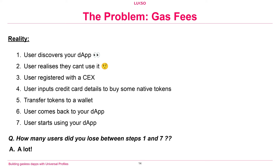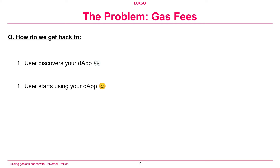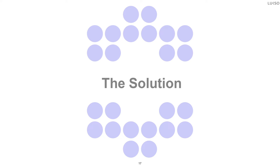The reality is users see your dApp, realize they can't use it, and have to go away — to a centralized exchange, do KYC, put in credit card details, send tokens to a wallet — then come back. How many users did you lose between steps one and seven? A lot. We're inherently limiting ourselves to users who've already gone through those seven steps. We want to get back to: users discover your application and immediately start using it.